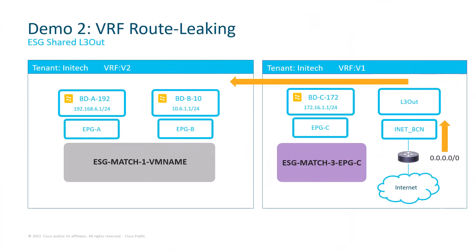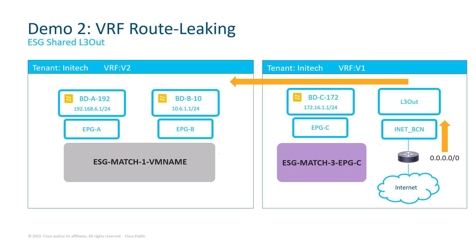Let's move on to the second scenario: ESG shared L3Out. In VRF1, I configured an L3Out to a router which has access to the external world. This router is sending a default 0/0 route toward ACI. We would like to use this L3Out not only for ESG3, which resides in V1, but also in VRF2, so that endpoints from ESG1 can access the external world. For explanation purposes I'll focus on V2 and ESG1 only, and you will see a complete list of configuration steps executed in the live environment.